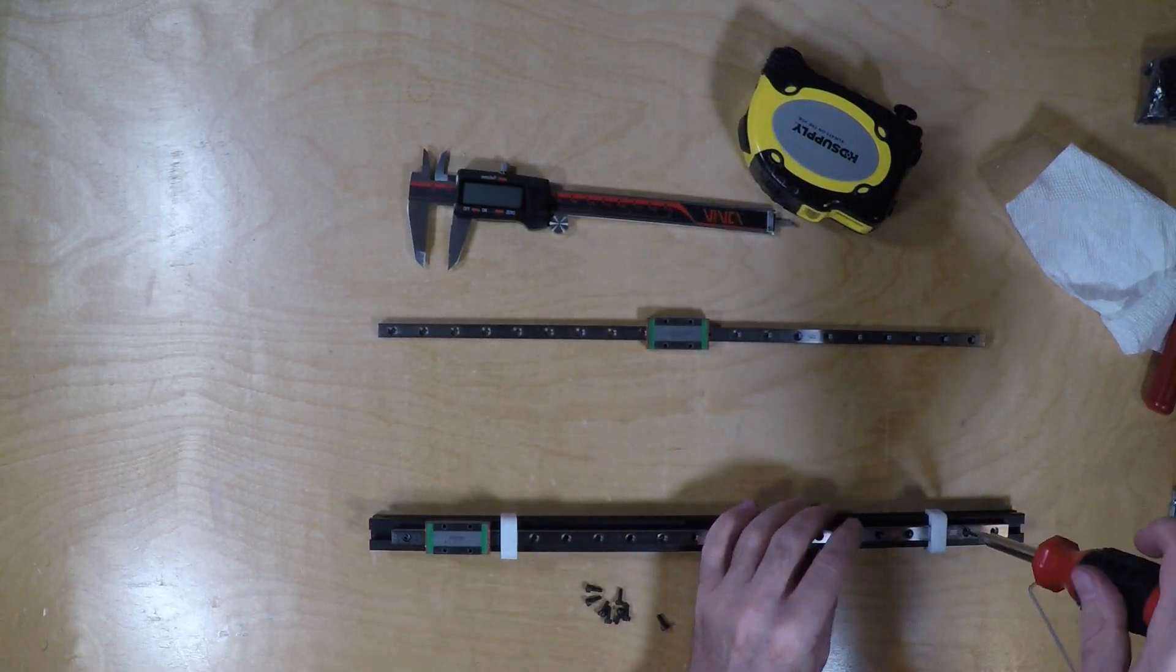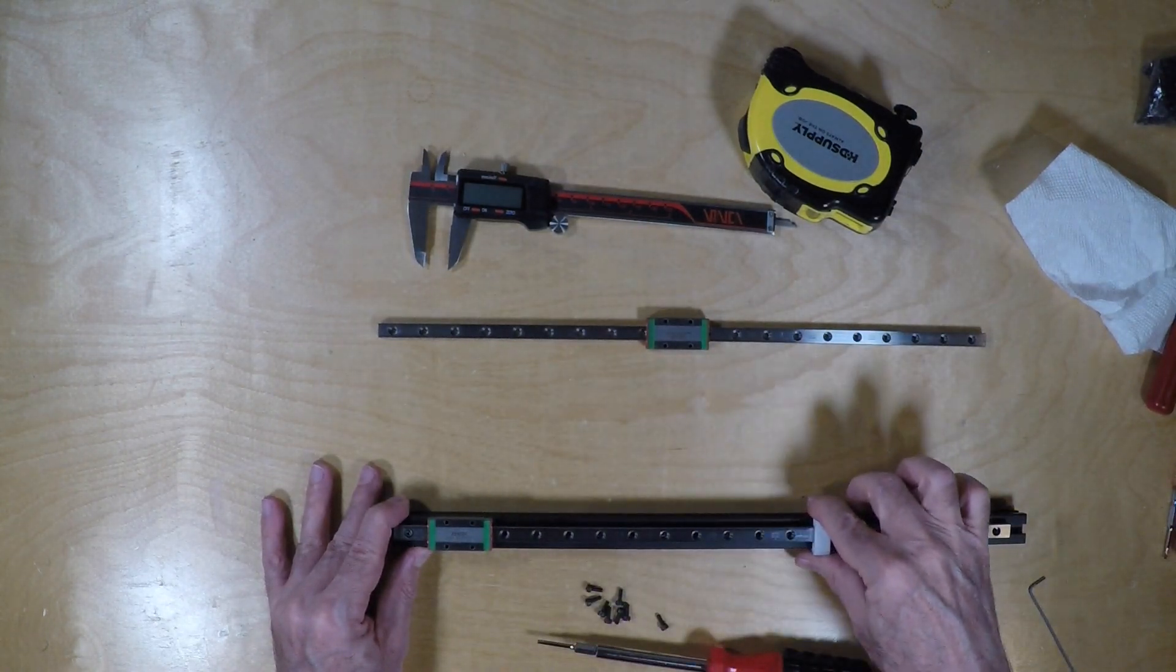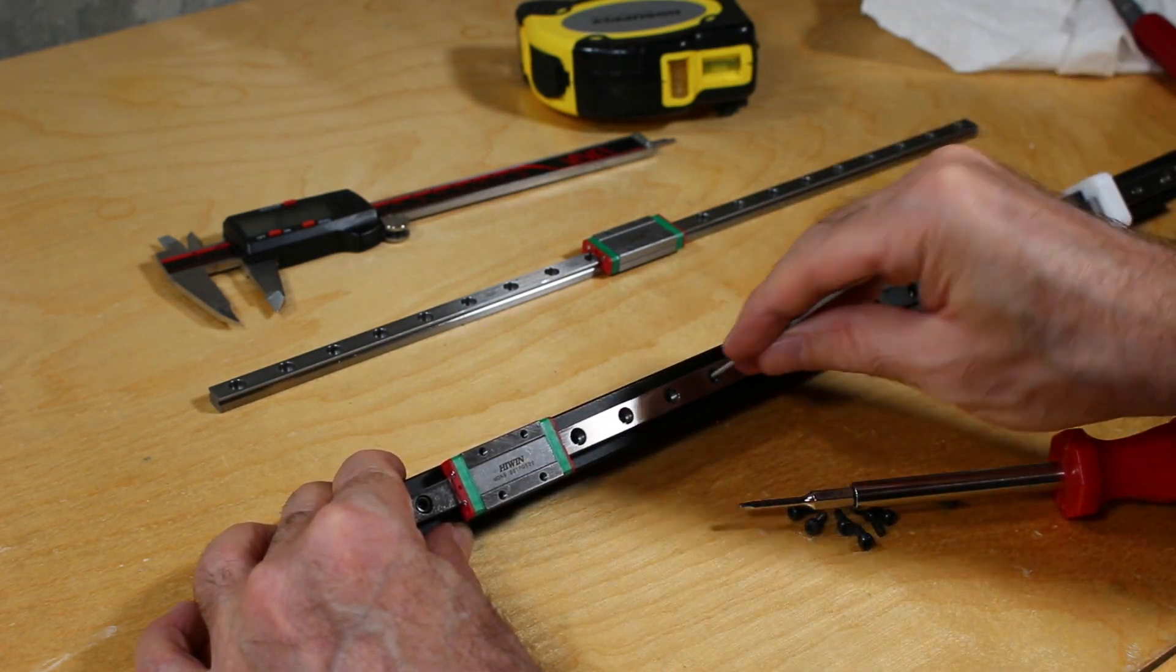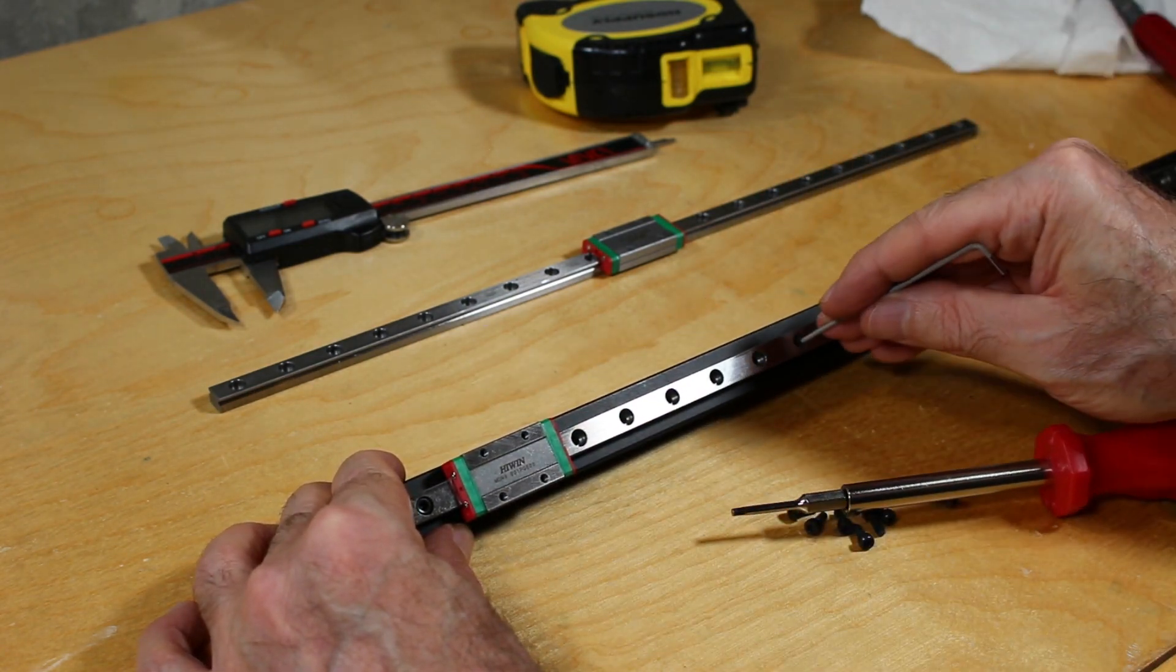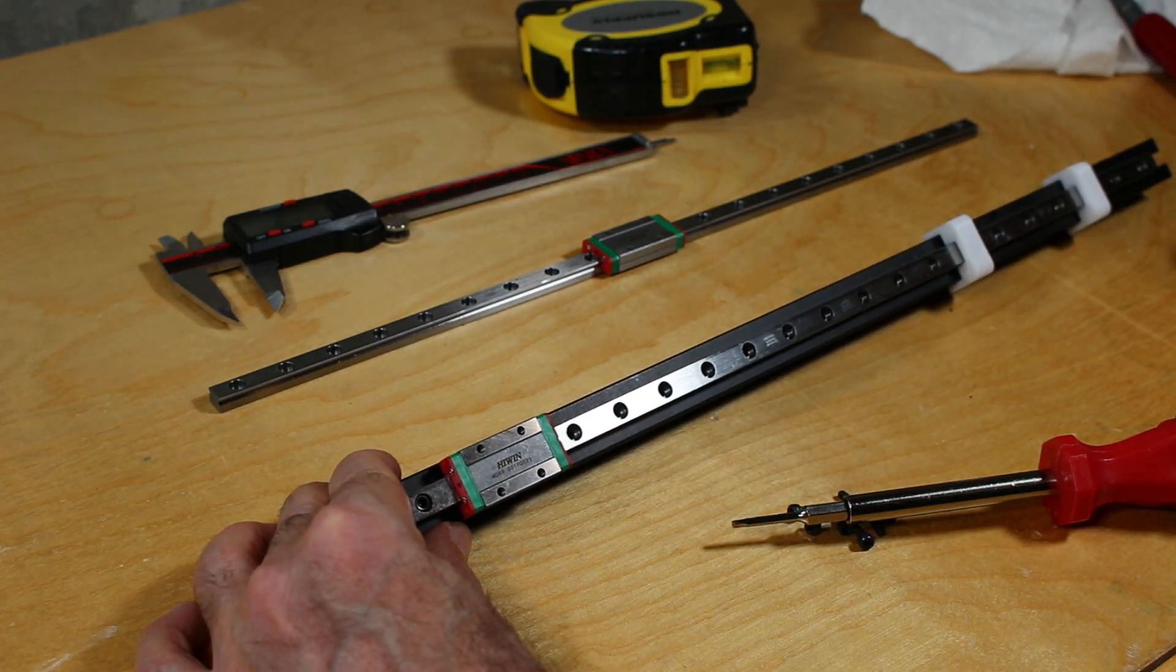Then you can go ahead and enter all the screws into the rail, remember every other hole, and be careful not to over tighten them. Be sure to center them just as I am doing right here.